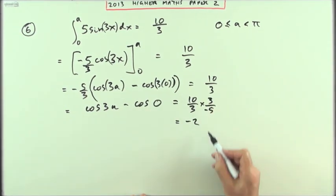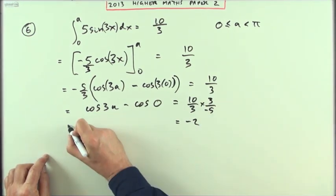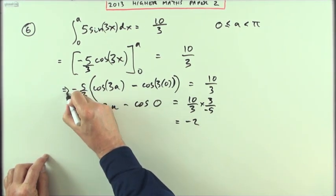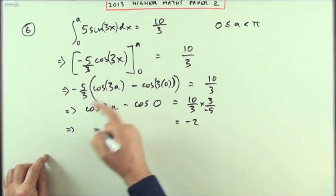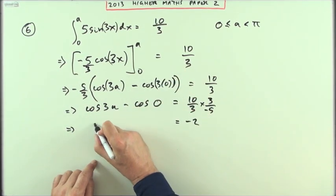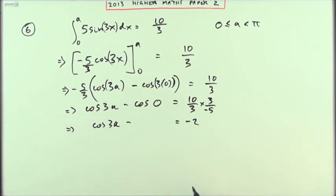So that part's going to come to negative 2, 3's cancel and 5 to 10 cancels twice. So that means I've got, those should have been implications because I've already got an equal to sign, that means I've got cos 3a minus whatever the cos of 0 is.